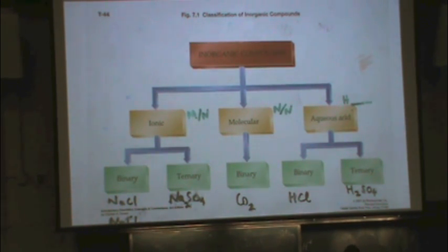A different system of naming is the ternary. This is Na2SO4. That's called sodium sulfate. It has more than two kinds of atoms in it. So that has a different naming system than binary, unfortunately.